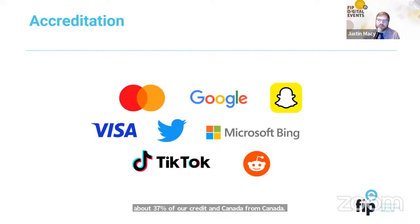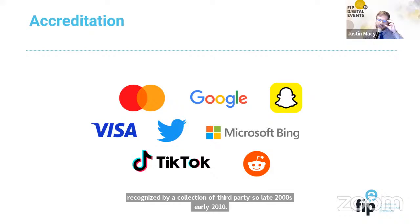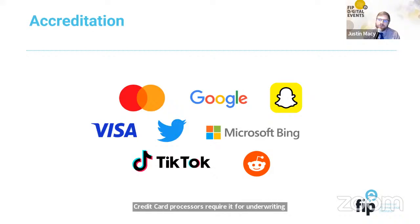The .pharmacy accreditation is recognized by a collection of third parties. In the late 2000s to early 2010s, Google was hit for about half a billion dollars, creating a ripple effect. Organizations then started taking action, and credit card processors began requiring accreditation for underwriting. That is how and why people get accredited today. With that, thank you.